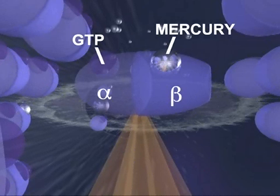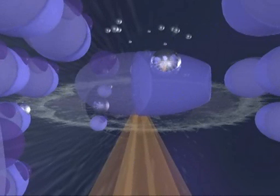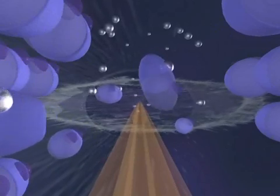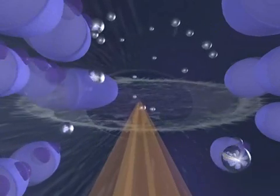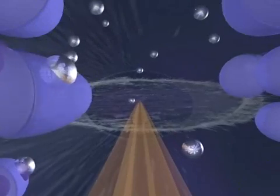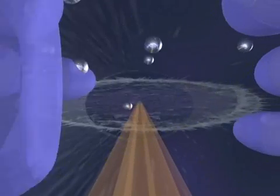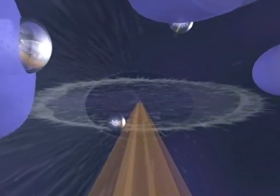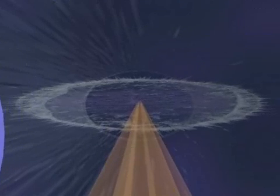Since bound GTP normally provides the energy which allows tubulin molecules to attach to one another, mercury ions bound to these sites prevent tubulin proteins from linking together. Consequently, the neurite's microtubules begin to disassemble into free tubulin molecules, leaving the neurite stripped of its supporting structure.